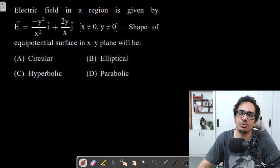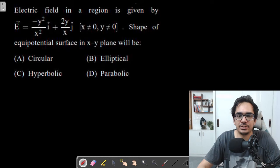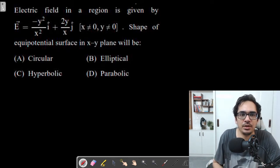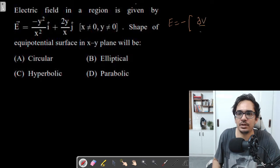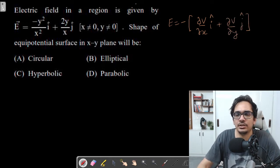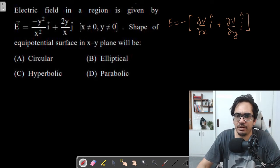How to find the equipotential surface shape if electric field vector is given? You must remember the reverse formula: electric field was minus del V by del x i cap, del V by del y j cap. If there is a z component, then del V by del z k cap. This is how you get the electric field vector.